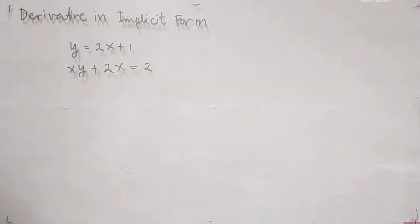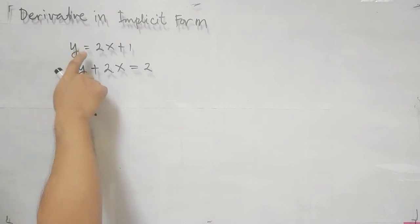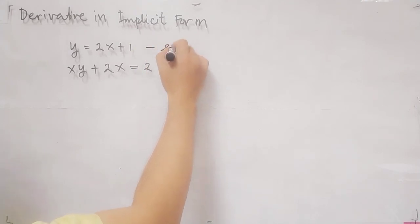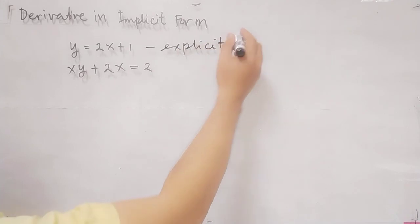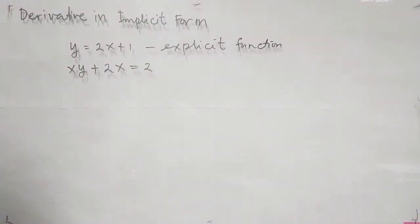We have the derivative in implicit form. A function in which the dependent variable is expressed solely in terms of the independent variable x — namely y equals f of x — is said to be an explicit function. For example, y equals 2x plus 1 is an explicit function. This is an example of an explicit function, and in our previous examples of finding the derivative, we used explicit functions.